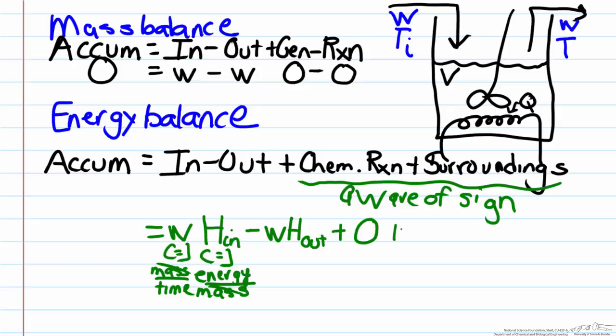Now we have to look at the surroundings term. Our system here has a heating coil which is providing heat at a rate of Q. Our control volume is the inside of the stirred tank heater. This is energy being added to the system, therefore we're going to have this as a plus Q. And our accumulation term for now we'll leave as d(energy)/dt.